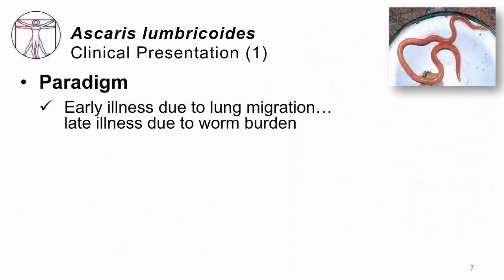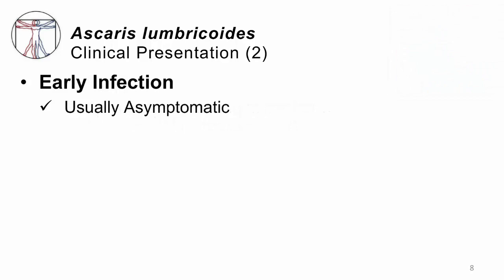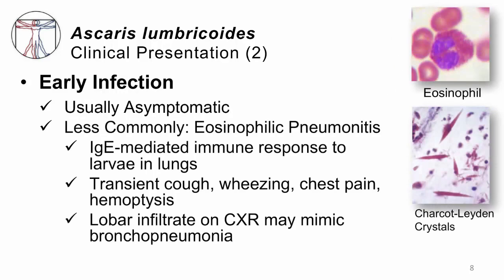How does it present clinically? The paradigm is that early illness shows up as lung migration, and later illness shows up due to the worm burden of adults in the colon. Early on, most people actually have no symptoms. But for those who do, we can see a syndrome called eosinophilic pneumonitis. The eosinophil is such an important host immune response to helminth infections as they migrate through your body. Eosinophil granules can be damaging to the worm, so when the body sees a worm migrating through tissue, eosinophilia rises in the patient's bloodstream and also in the lung tissue itself.